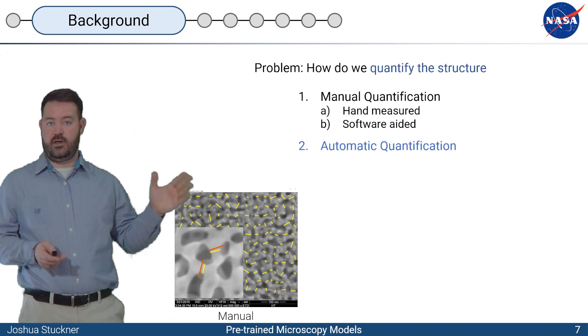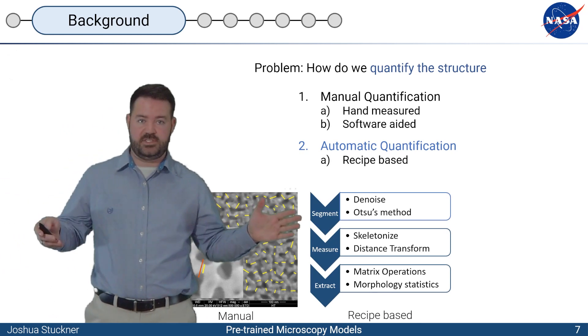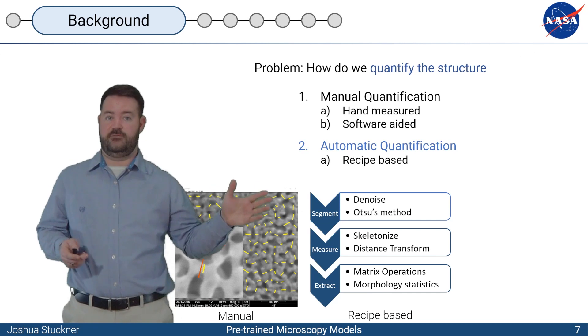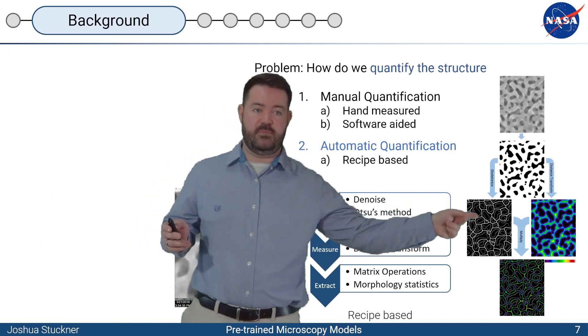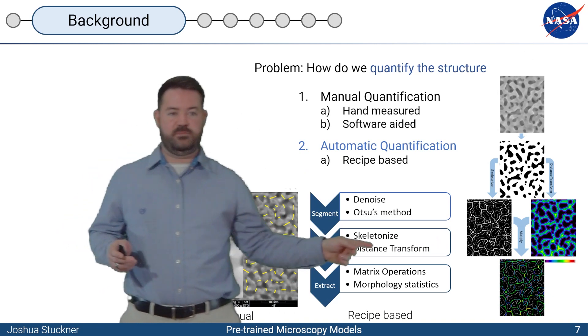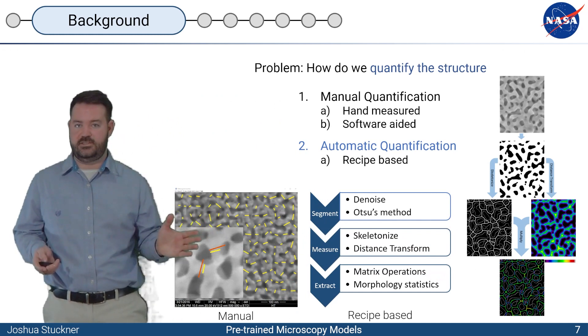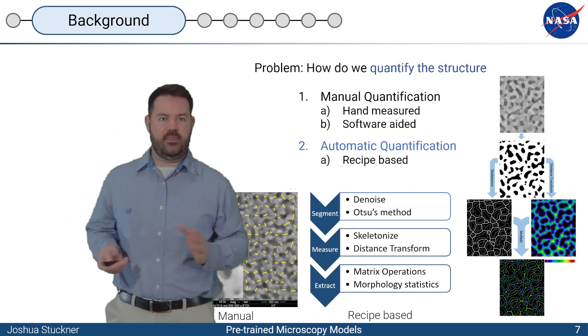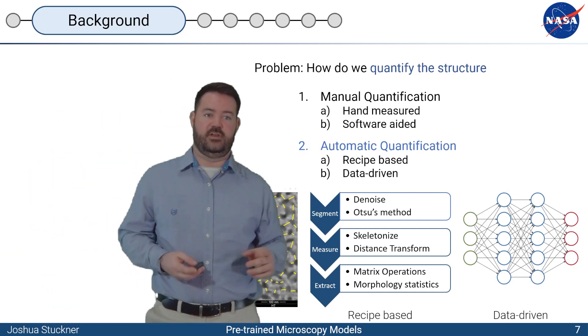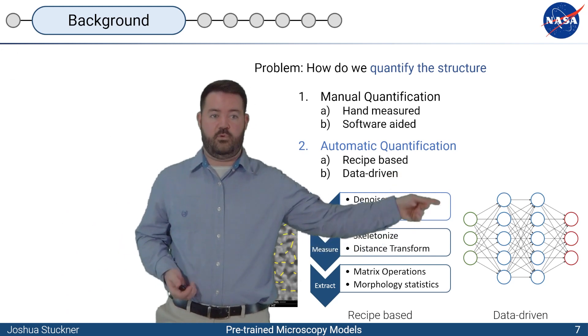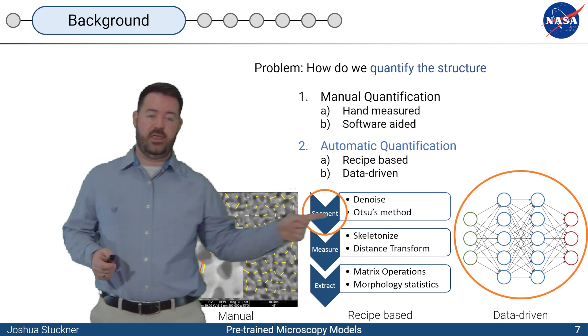But automatic quantification has become quite popular in the last decade or two. One is recipe-based where we prescribe some computer vision algorithms that are going to extract the features. For example we might segment the image with Otsu's method, do skeletonization to find the center of the backbone and maybe a distance map with a distance transform. But these can be a little bit tedious to create and maybe they're not robust if you vastly change the imaging conditions. Newer approaches are using purely data-driven techniques where we use neural networks and just input the image and then get quantified feature vectors out the other end.